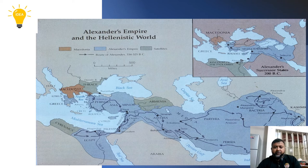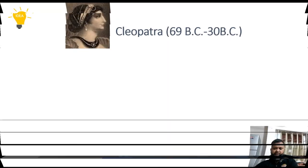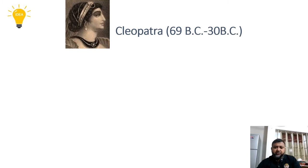This is Alexander's Empire and the Hellenistic world as you can see in the map. Alexander had conquered half of the world. After his death, his empire was divided among four of his generals. Those four domains are collectively known as the Hellenistic world. Here comes Cleopatra — her period was 69 BC to 30 BC, to be exact.